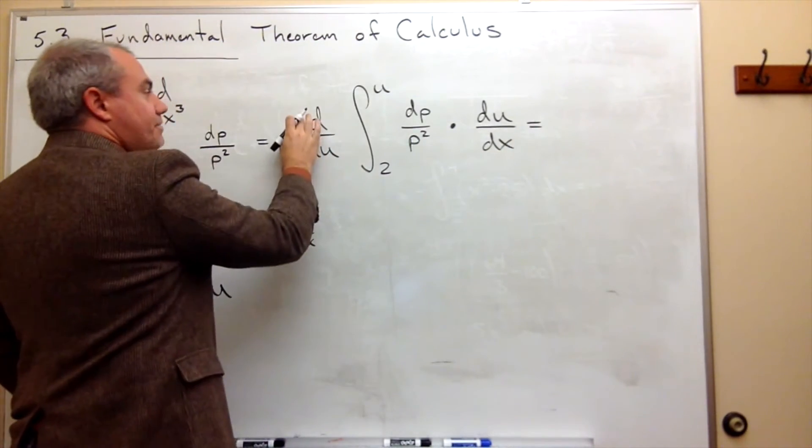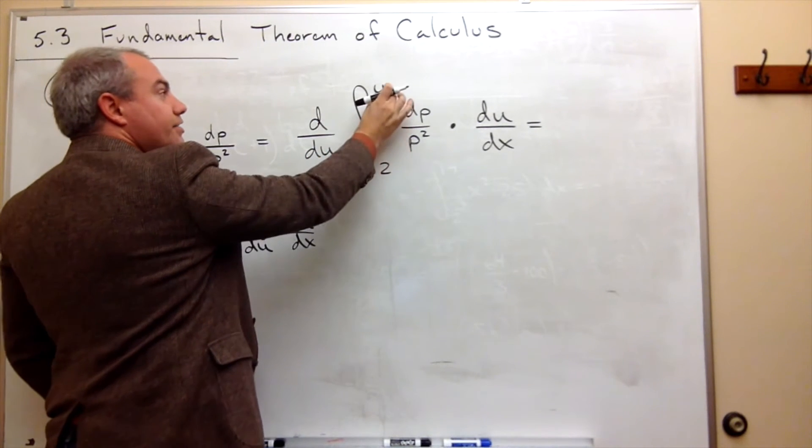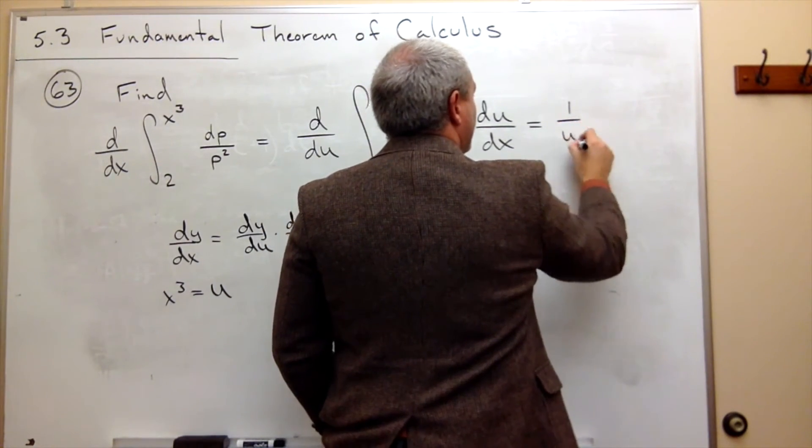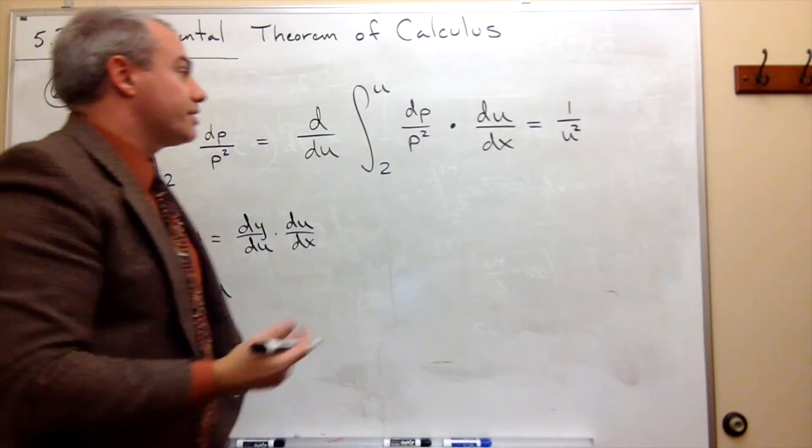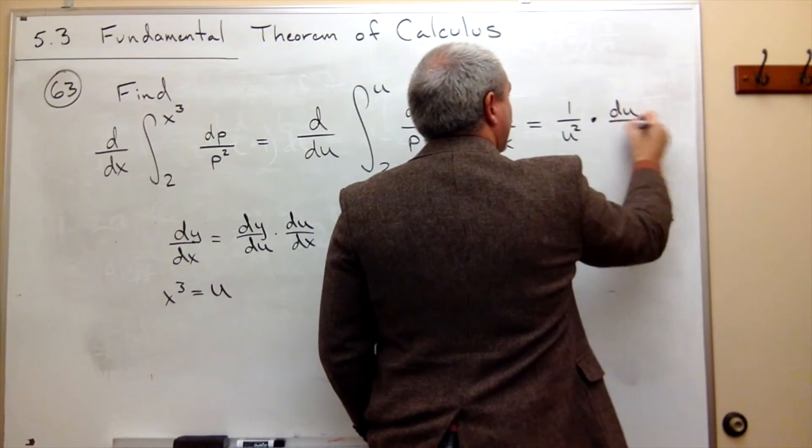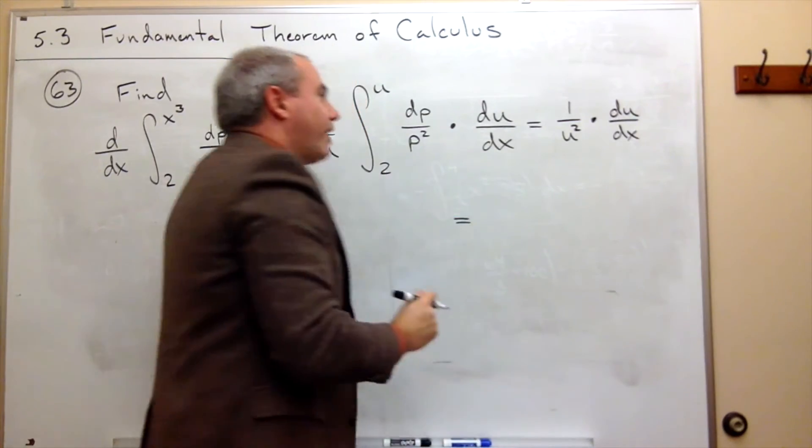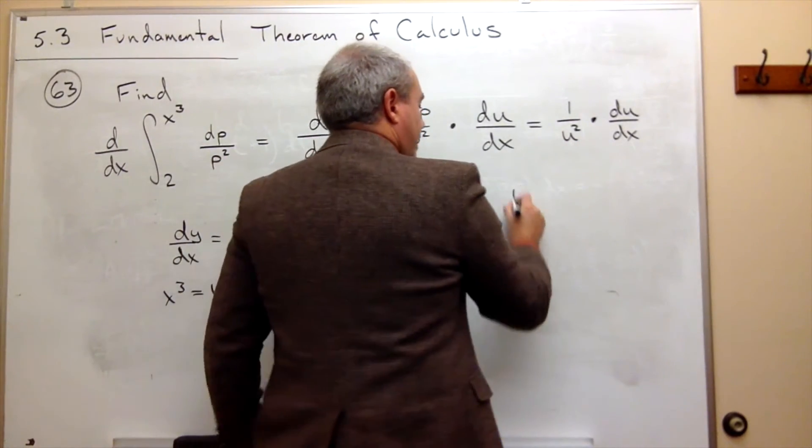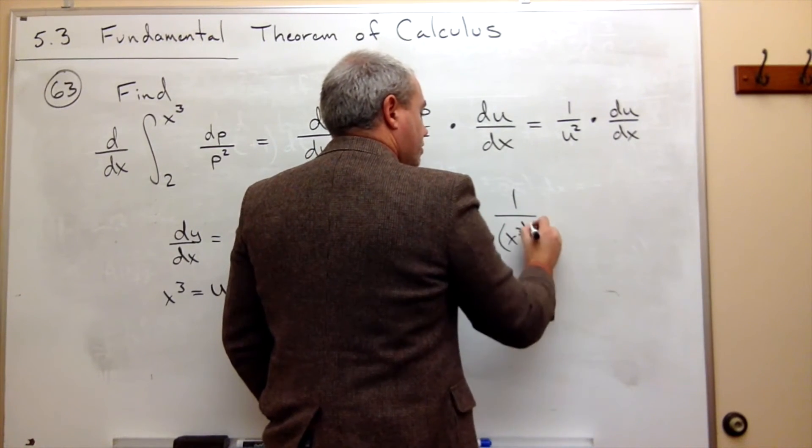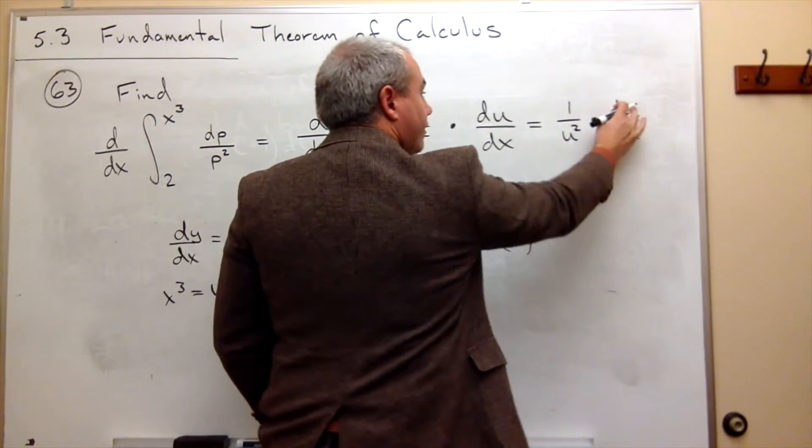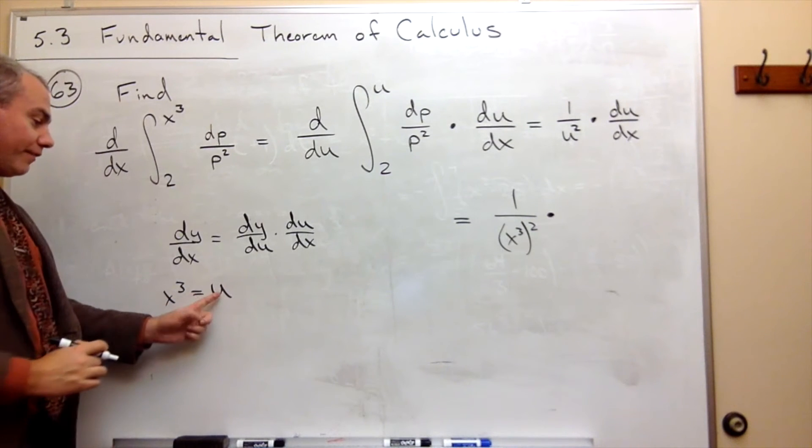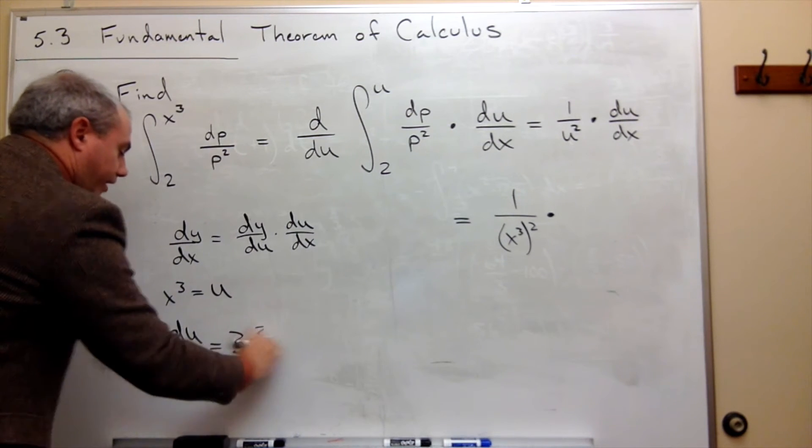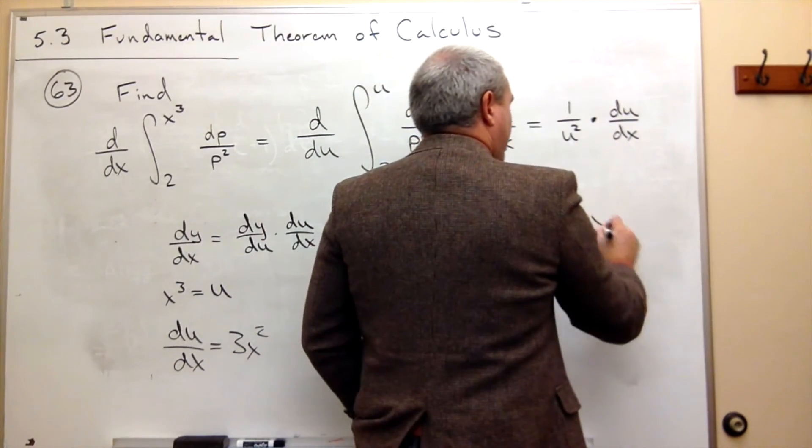So the fundamental theorem here now says I'm taking the derivative with respect to u of a constant to u. So just take a u here, plug it in for p, and what I would get is just 1 over u squared times the derivative of u with respect to x. Well, now I just need to ask the question, what is u? u is x cubed. So I can just plug in an x cubed for u, and I get 1 over x cubed squared, times the derivative of u with respect to x. What is the derivative of u? u is x cubed. So the derivative of u with respect to x is 3x squared.